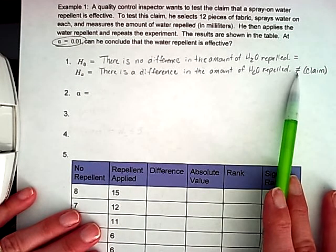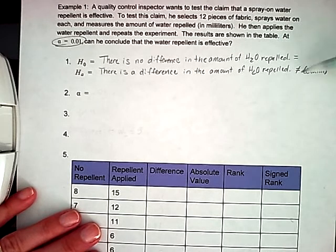So if there is a difference, mathematically, that's not equal. Now from previous hypothesis tests, you'll remember that an equals, not equals will give us a two-tailed test.